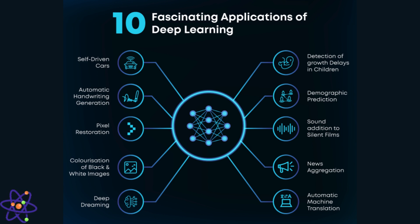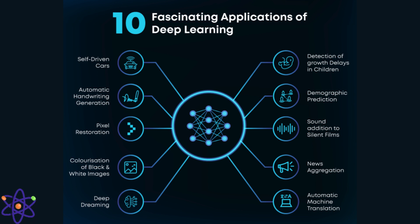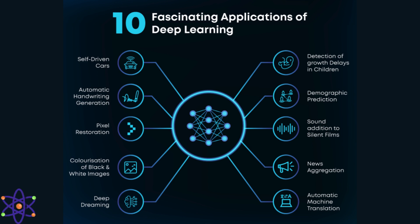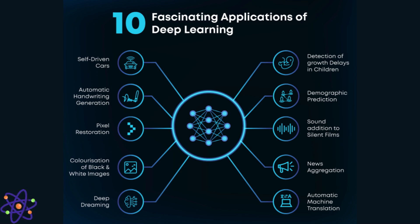Applications and future trends include explainable AI, continual learning, self-supervised learning, federated learning, robust and adversarial machine learning, AI for healthcare imaging, generative models and AI creativity, neuromorphic computing, AI ethics and responsible AI, and quantum computing and AI. Explainable AI (XAI) aims to enhance the transparency and interpretability of deep learning models, making them more trustworthy and accountable. Generative models such as GANs are likely to be applied more extensively in creative fields, including generating realistic images, videos, and music.